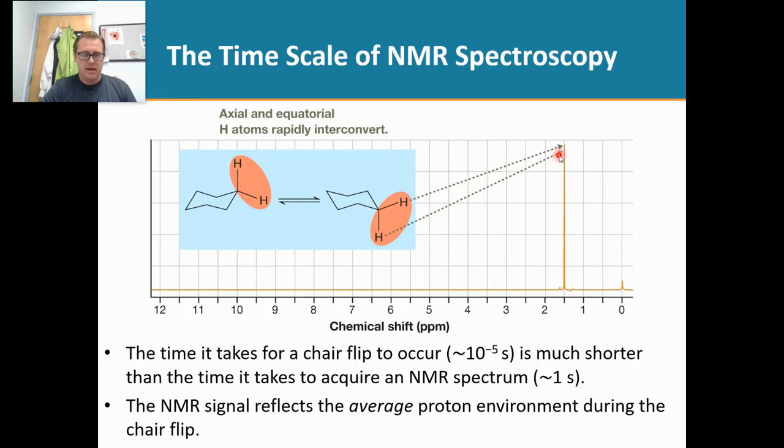Now what's interesting here is if you do the replacement test between this axial hydrogen and this equatorial hydrogen, you will see that they are not equivalent. But why are they giving us one signal when they're not equivalent?